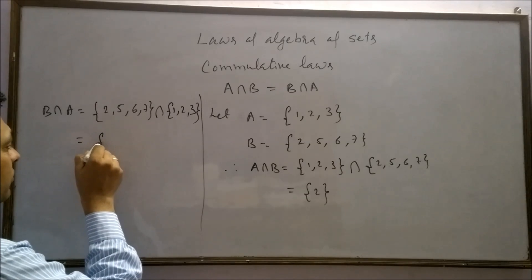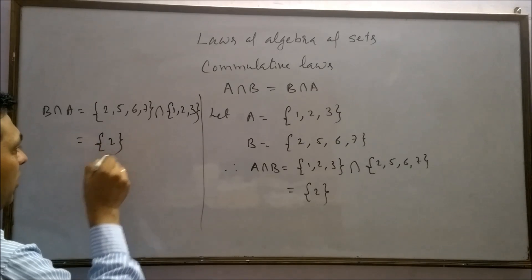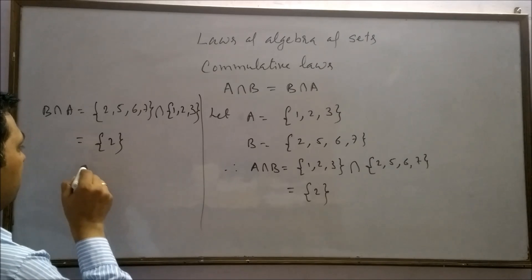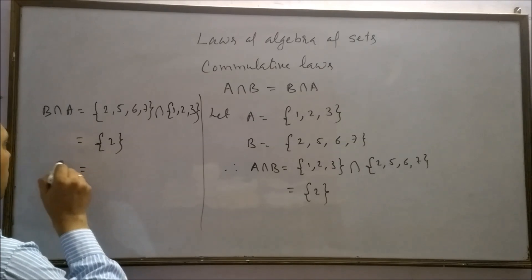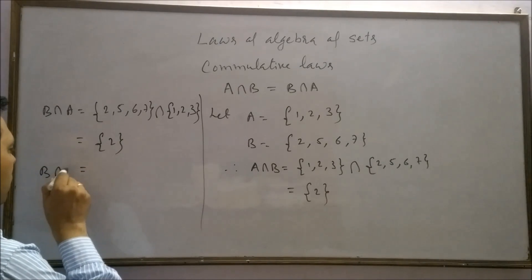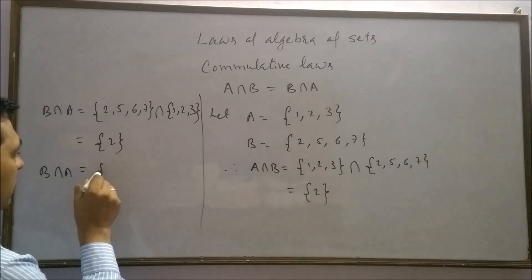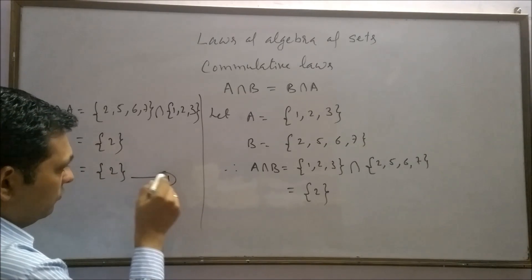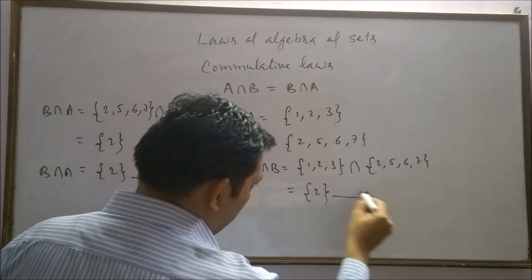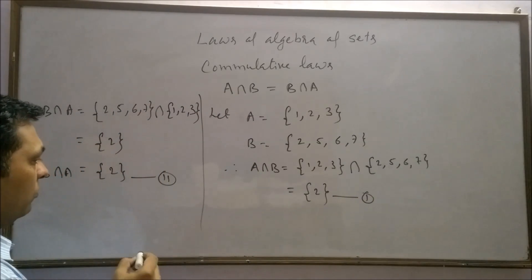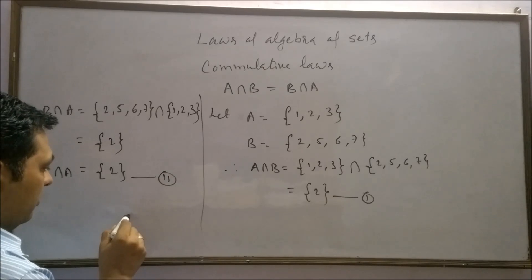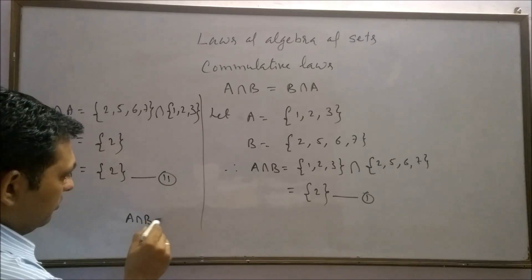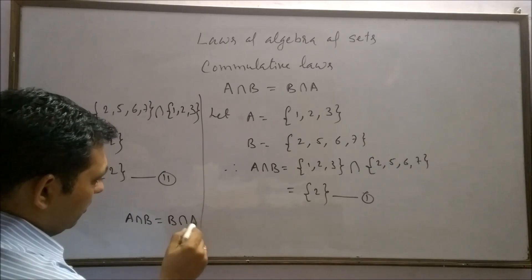Further, 2 is the common element between these two sets. Therefore, B intersection A is a set containing {2}. From 1 and 2, we see that A intersection B equals B intersection A.